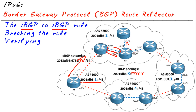Because R3 learned the route via an IBGP neighborship, it will not advertise it to others. So R4 wouldn't get it and R5 wouldn't get it — at least not from R3. That's a problem, because R4 is not going to learn that prefix if R3 doesn't tell it about it.